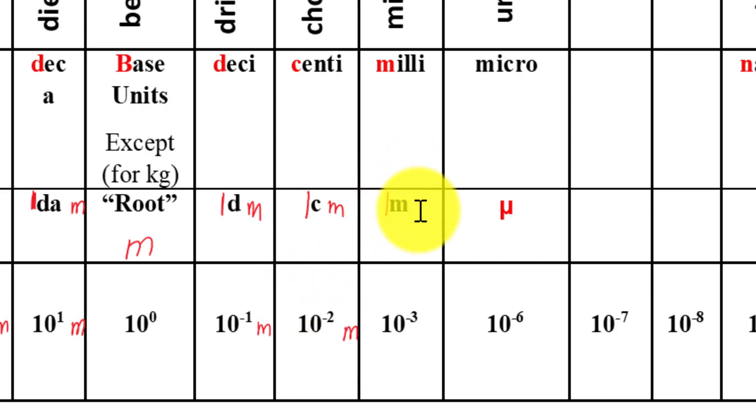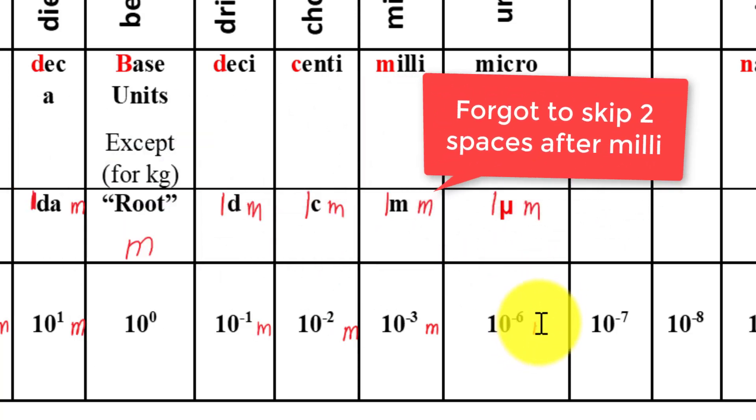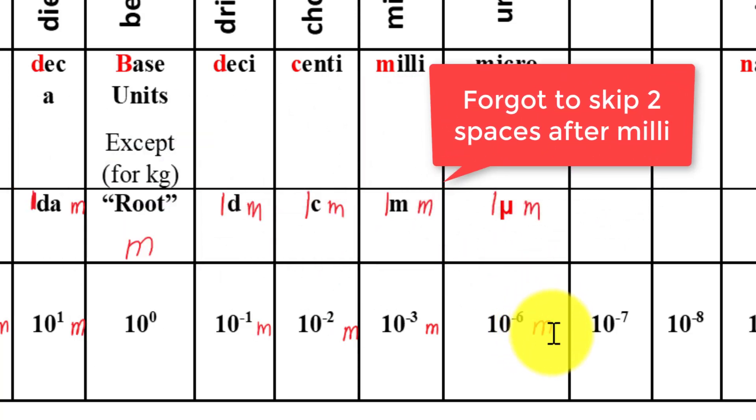Milli: one millimeter equals ten to the negative three meter. Micro: one micrometer equals ten to the negative six meter.